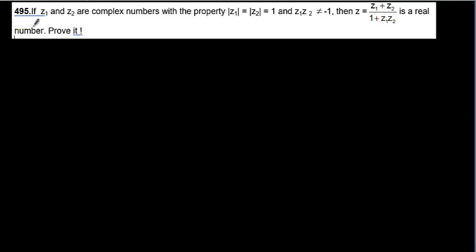This is question 495 from the blue book. It gives two complex numbers whose modulus is equal to 1, and their product is not equal to minus 1, because if it is minus 1 this expression will be undefined. It says that z equals z1 plus z2 all over 1 plus z1 times z2.